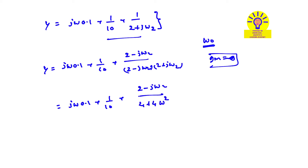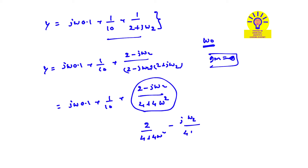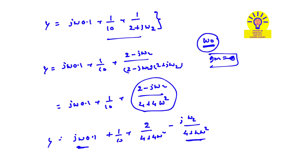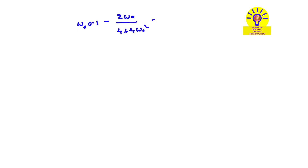This can be written as two terms: real part = 2/(4 + 4ω²) + 1/10, and imaginary part = ω·0.1 − 2ω/(4 + 4ω²). At resonant frequency, the imaginary part equals zero: ω₀·0.1 − 2ω₀/(4 + 4ω₀²) = 0.